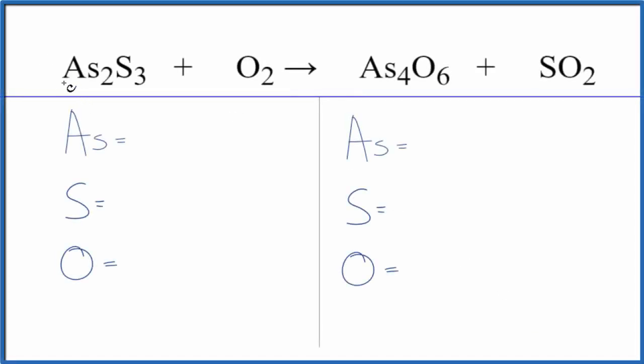In this video we'll balance the equation for As₂S₃ plus O₂. This is arsenic sulfide plus oxygen gas. Let's count the atoms up on each side and then balance the equation.